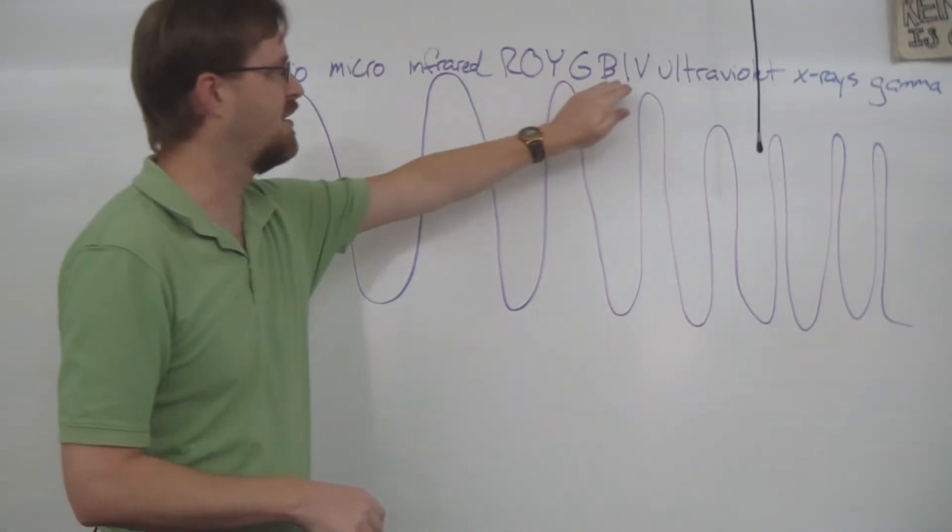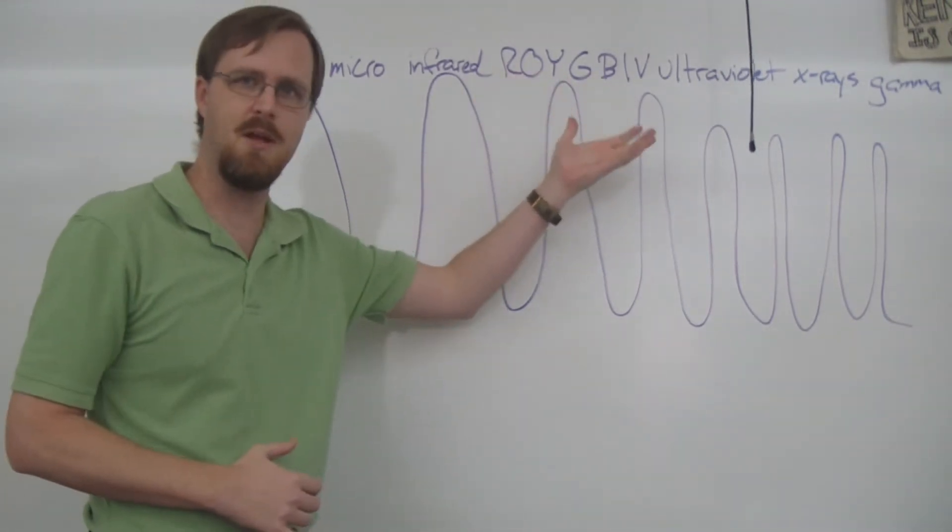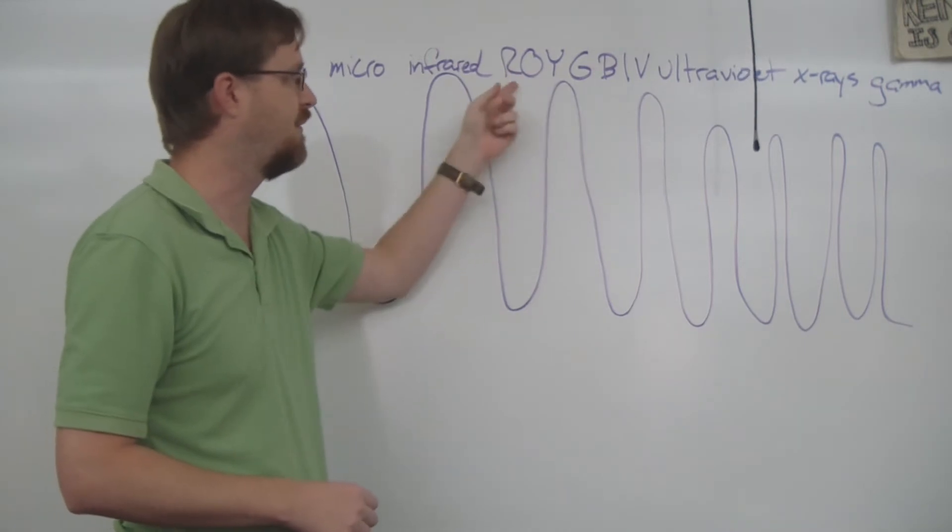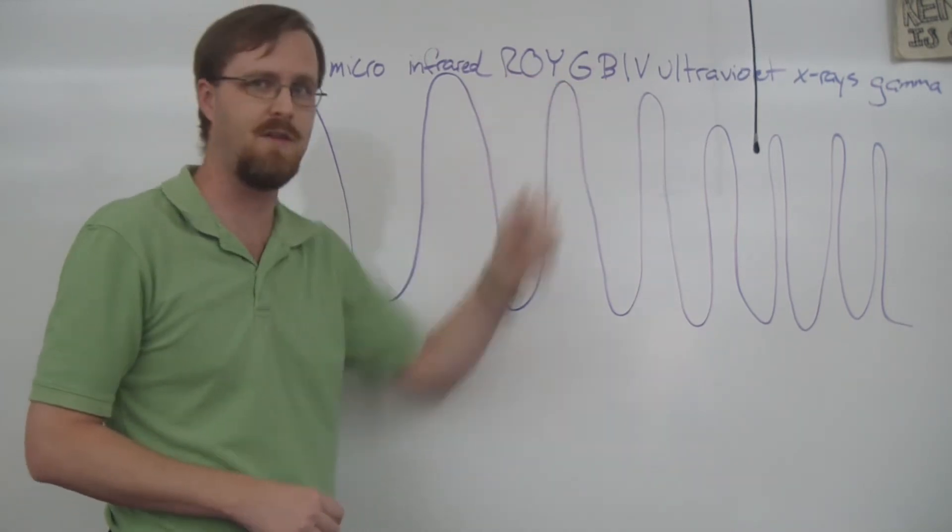So our colors are right here in the middle. Everybody remembers from elementary school Roy G. Biv, right? Red, orange, yellow, green, blue, indigo, violet.